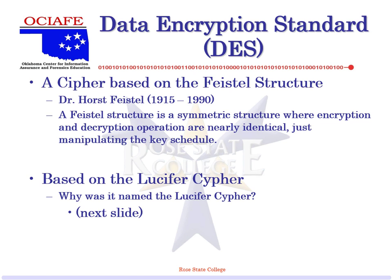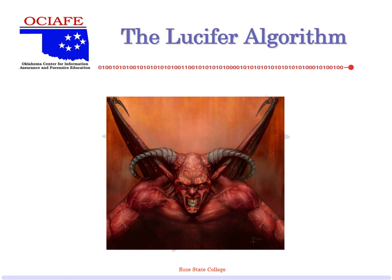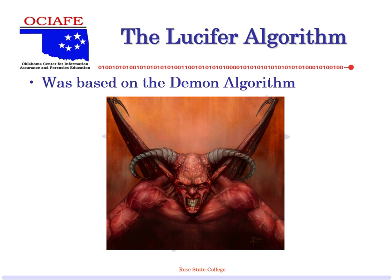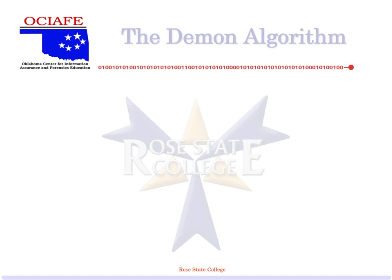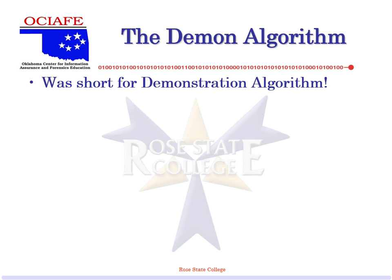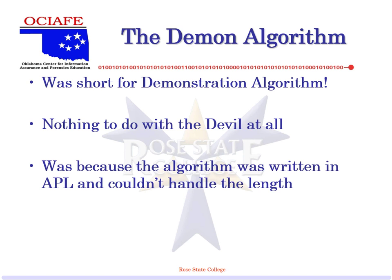Why was DES based on the Lucifer cipher? The Lucifer algorithm was based on the Demon algorithm — Demon, Devil, Lucifer. Actually, it was based on the Demonstration algorithm. When IBM presented it they presented the Demonstration algorithm. APL couldn't handle the length of the name 'demonstration,' so they shortened it to D-E-M-O-N, which became the devil, hence Lucifer. It's really just short for demonstration — kind of funny.